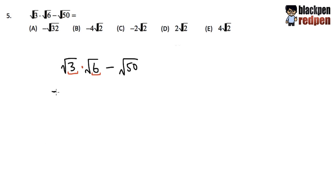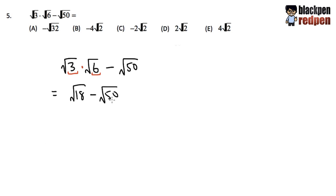That's exactly what we are going to do first. So we know that 3 times 6, that's 18. But then we still have to maintain the square root because we didn't do the square root yet. So we can actually multiply the numbers inside of the square root. And sometimes if it's a division, we also get to divide the numbers inside of the square root. Now let me write it down the minus square root of 50.